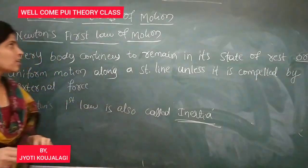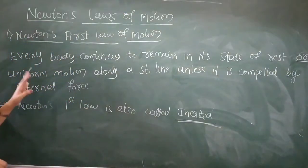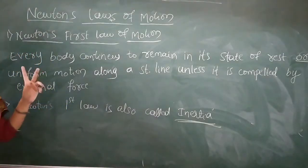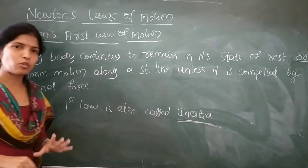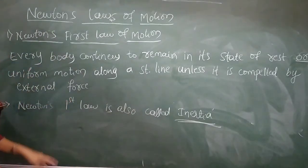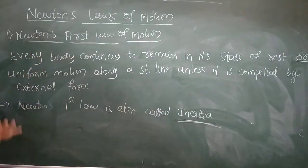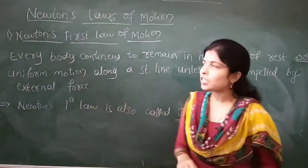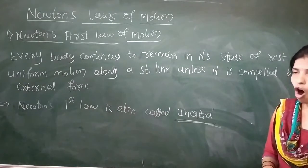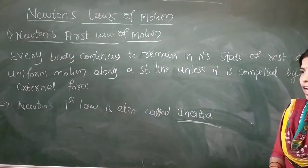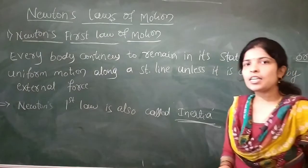Next thing is Newton's first law of motion. There are three laws of motion. In the first law of motion, it states everybody continues to be in its state of rest or linear motion along a straight line unless it is acted upon by an external force.